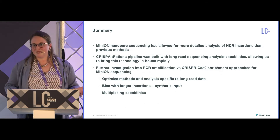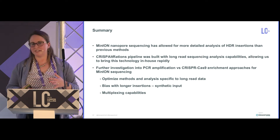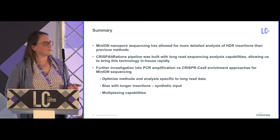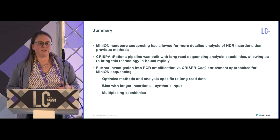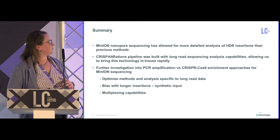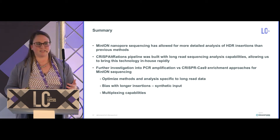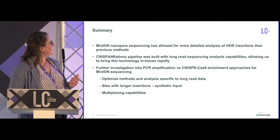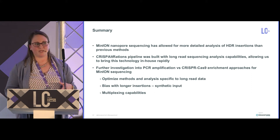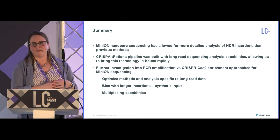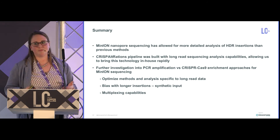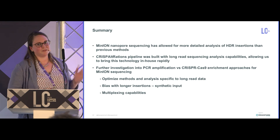We have a lot more we want to do: more detailed analysis, generating sequence alignments, and more comparisons between PCR amplification and Cas9 enrichment, looking at optimized methods, comparing bias with larger insertions, using synthetic data to quantify if PCR bias is a factor, and exploring multiplexing capabilities. A key benefit of the Cas9 enrichment approach is multiplexing RNP complexes — for example, looking at an on-target editing site and many known off-target editing sites simultaneously. We also want to apply our RAMP-Seq PCR for multiplexing using the long-read approach.